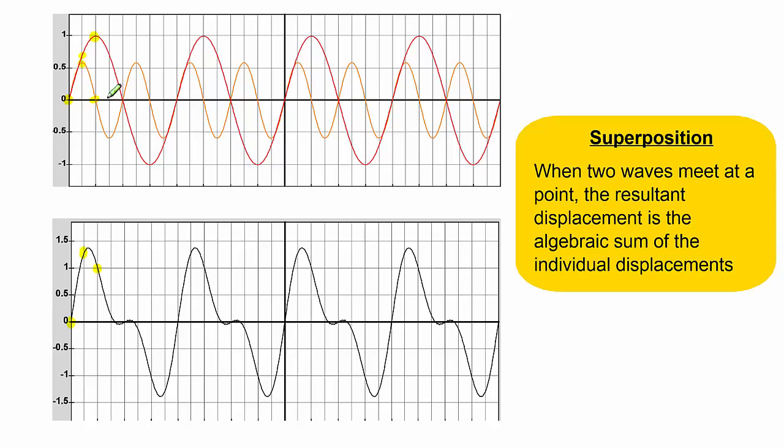Move one more second along and we'll get a red wave here that has a displacement of 0.7. The orange wave has a displacement of minus 0.6, so we must sum these algebraically: 0.7 minus 0.6. That will give us a displacement of 0.1, which is why this point here is right down here.